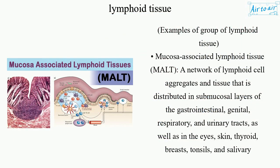Mucosa-associated lymphoid tissue (MALT): a network of lymphoid cell aggregates and tissue distributed in the submucosal layers of the gastrointestinal, genital, respiratory, and urinary tracts, as well as in the eyes, skin, thyroid, breasts, tonsils, and salivary glands.